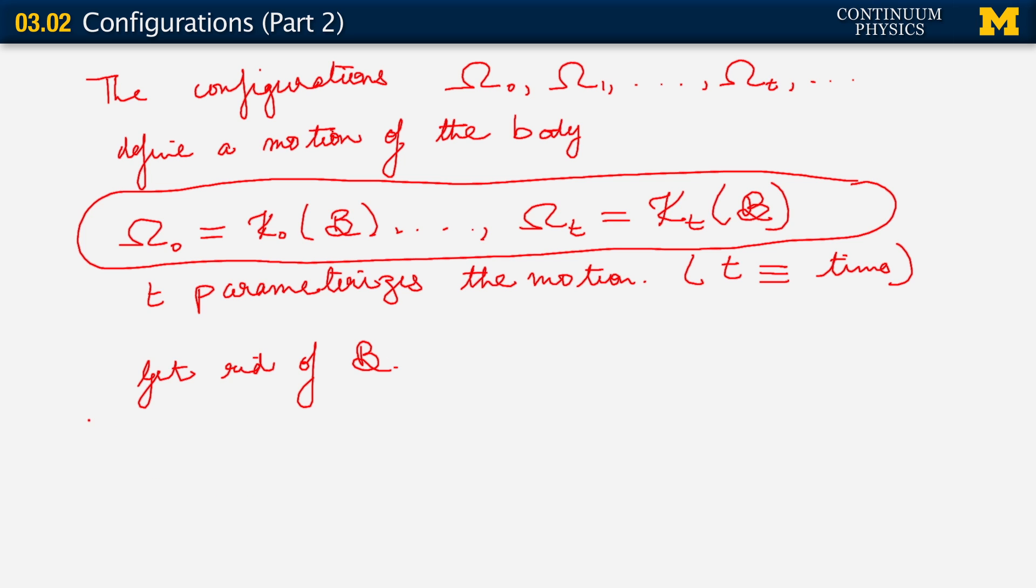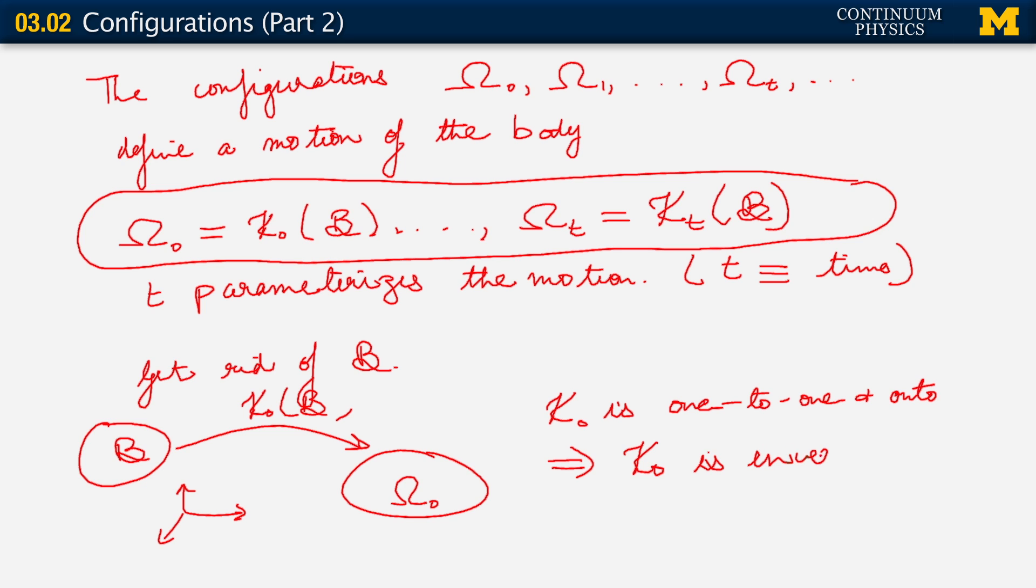And what we want to do here is get rid of B. And here's how we can do it. So again, we have our body B. Let me look at one of these maps, the very first one. Let me look at kappa naught of B, which takes us to a configuration which we called omega naught. And we have ever present our basis vectors, reminding us that we are in three dimensions. Now, what we are going to say is that the map kappa naught is essentially one to one and onto. So what this implies is that kappa naught is invertible.